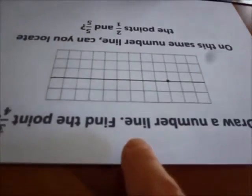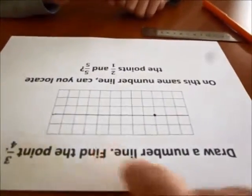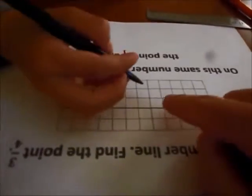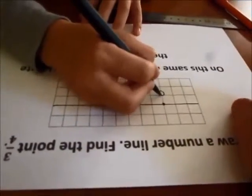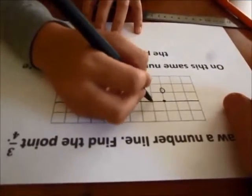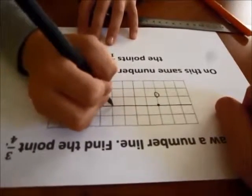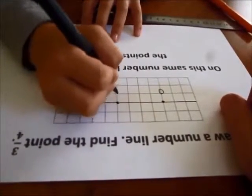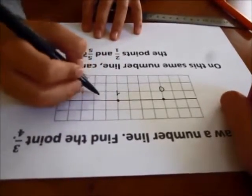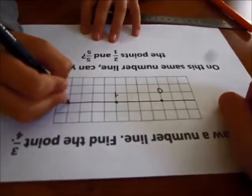Now this problem wants you to find the point three-fourths. So what do you want the whole to be? How many segments do you want to represent the whole? Four. Four. Okay, why don't you do that. Show me where the number... First of all, label that as zero. Where's the number one? Here. Okay, label that as number one underneath. And where's the number two? Here. Okay.